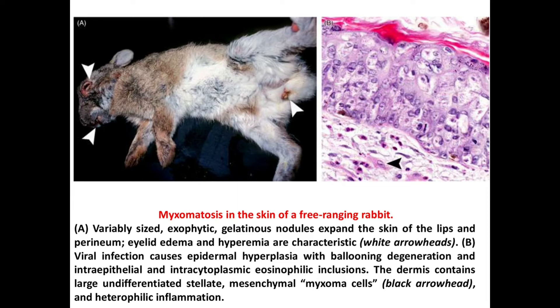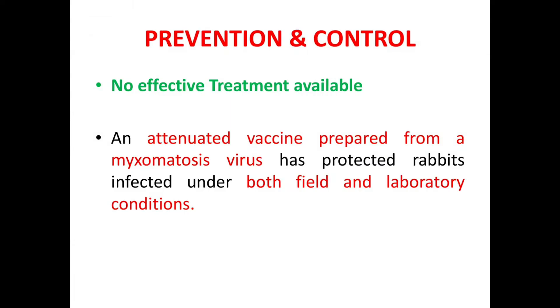Myxomatosis in the skin of a free-ranging rabbit: you can see variably sized gelatinous nodules expanding the skin of the lip and perineum, eyelid edema, and hyperemia. You can also see the histopathology there.